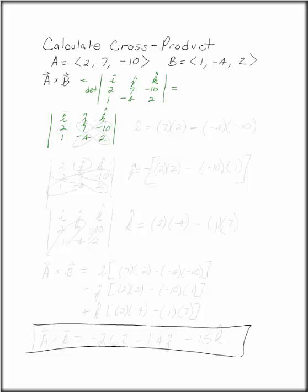Specifically, if I want to find the I component, I'm going to cross out everything in the I column and row. And then once I have this, I want to cross the 7 and the 2 and the negative 4 and the negative 10. So the I component will be 7, 2, minus negative 4, negative 10.